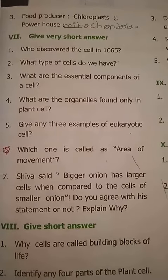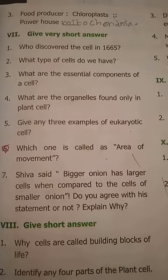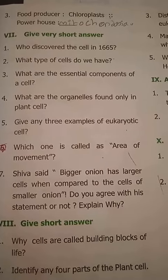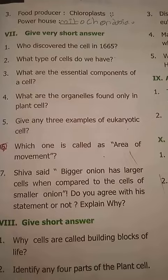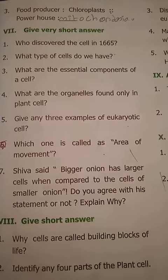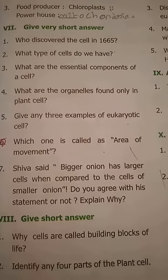What are the essential components of a cell? The essential components of a cell are: cell membrane, cytoplasm, and nucleus.